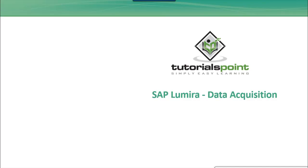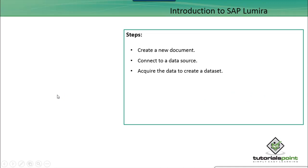Welcome to Tutorials Point. In this tutorial we will discuss data acquisition in SAP Lumira. The different steps of acquiring data in SAP Lumira are: first, you have to create a new document; then you have to connect to a particular data source, which can be anything like Universe, HANA, Microsoft Excel, and others.